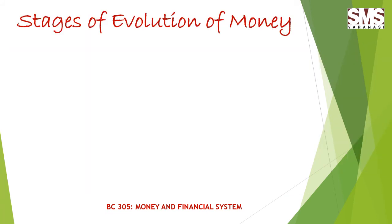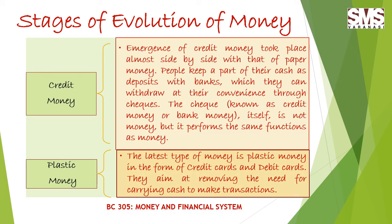The fourth stage of evolution of money is credit money. The emergence of credit money took place almost side by side with that of paper money. People keep a part of their cash as deposits with banks, which they can withdraw at their convenience through cheques. Cheques were used and at present also cheques are used as money. It is like a bank note and transfers money from one place to another. A cheque is a written order to transfer money, and nowadays large transactions are made through cheques only. The cheque is known as credit money or bank money — it itself is not money but performs the same functions as money.